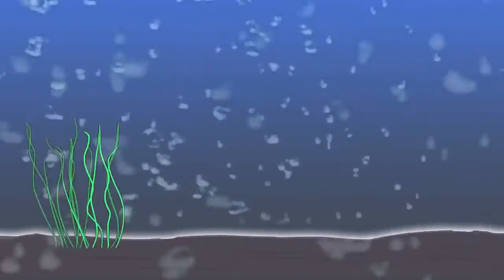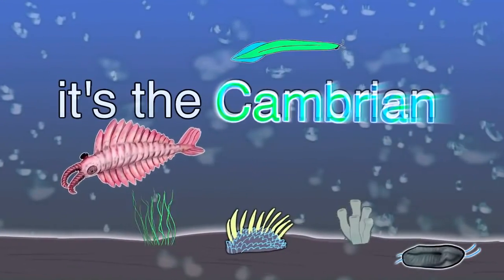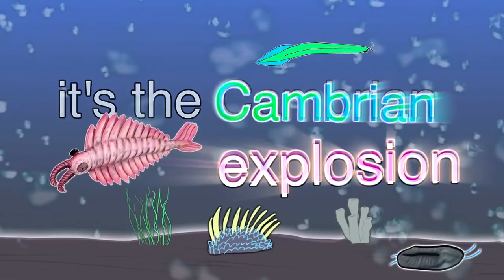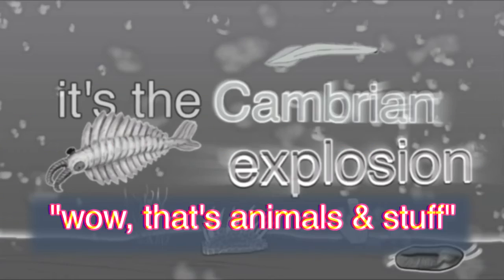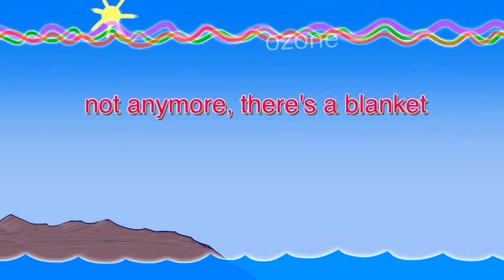It's a sponge. It's a plant. It's a worm. And some other types of weird strange water bugs and strange fish. It's the Cambrian Explosion. Wow that's animals and stuff. But we're still in the ocean. Hey can we go on land? No. Why? The sun is a deadly laser. Oh okay. Not anymore there's a blanket.